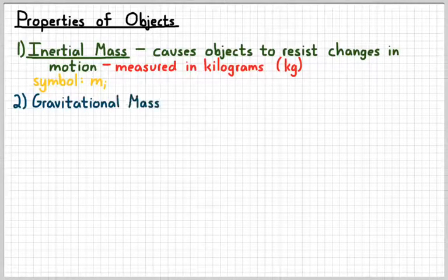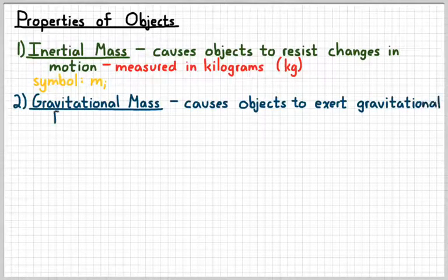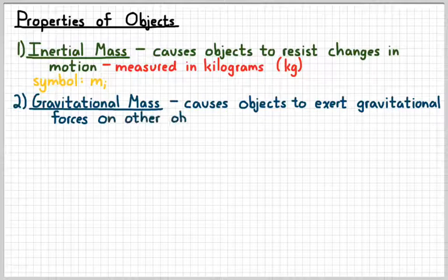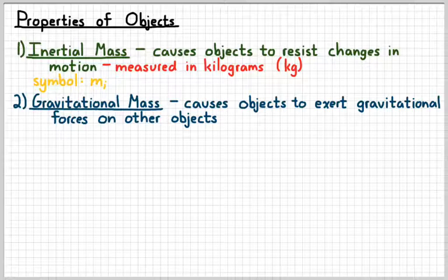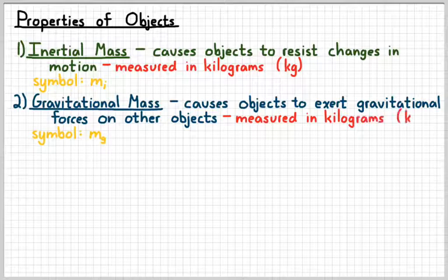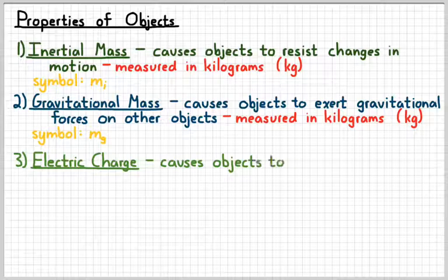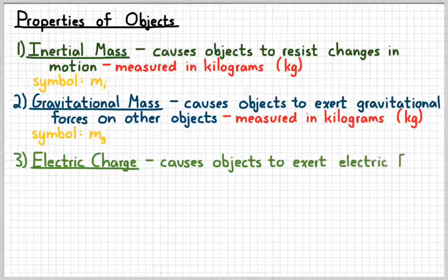The second kind of mass is referred to as gravitational mass. This is the mass that causes objects to exert gravitational forces on each other. For example, there is an object that is very large, close to you, called the Earth, that exerts a very large gravitational force on you. The symbol for this kind of mass, we may give it m with a subscript g. And just like inertial mass, it's measured in kilograms. And one of the things we want to do is determine what the relationship between those two kinds of masses are.